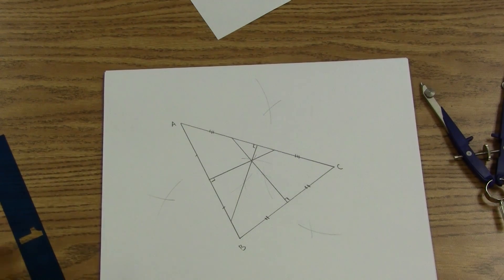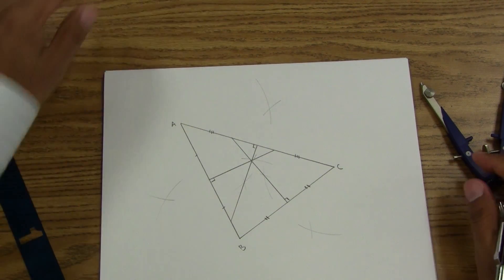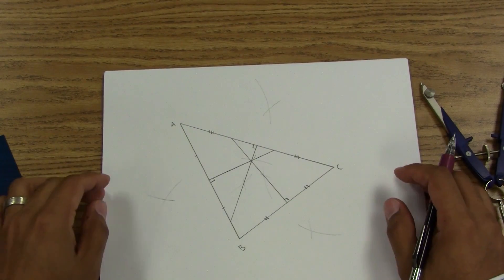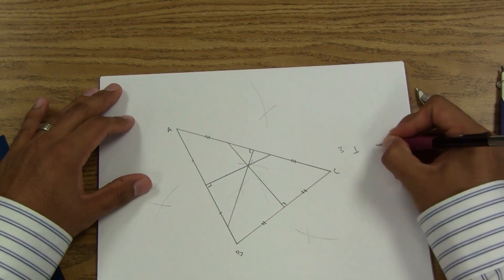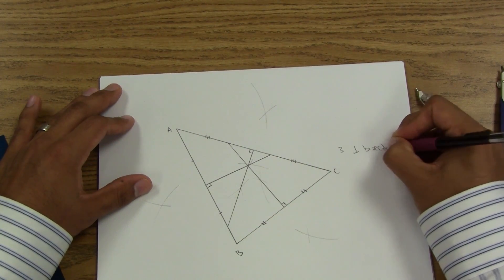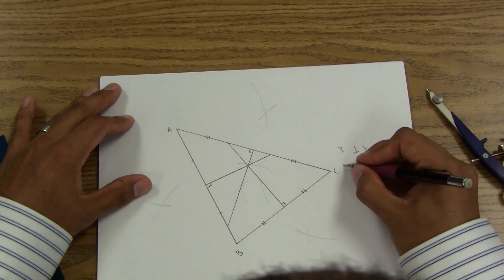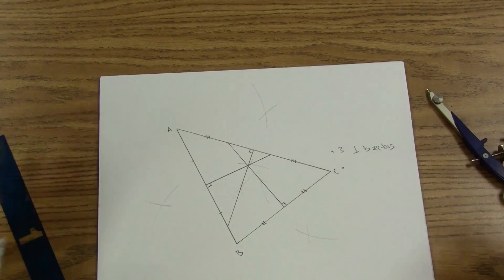All right, you should be done by now. Let's take a look at what happened here. We have, once again, a point of concurrency that we made with three perpendicular bisectors, and let's see why it's special.